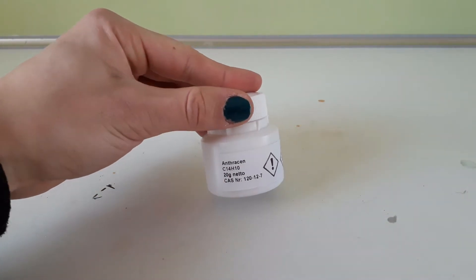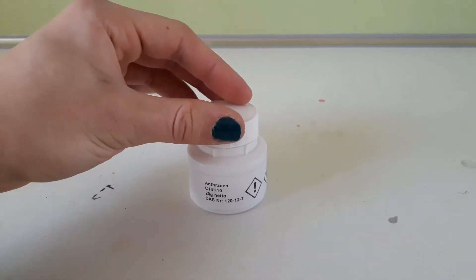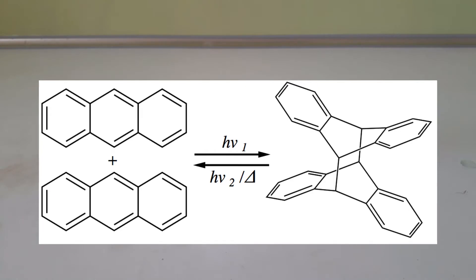Hi. In this video I will be showing you a cool chemical reaction between anthracene and anthracene. This reaction is a photochemical dimerization reaction, and this is just fancy chemistry talk for forming bonds with light energy between two molecules.